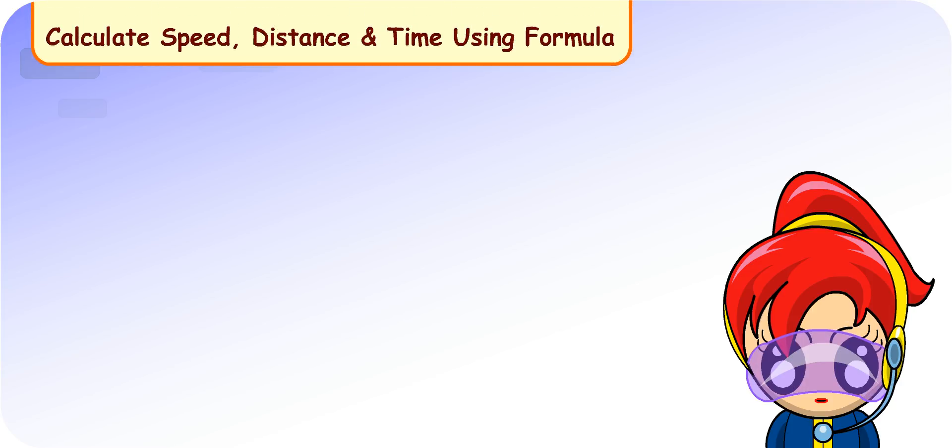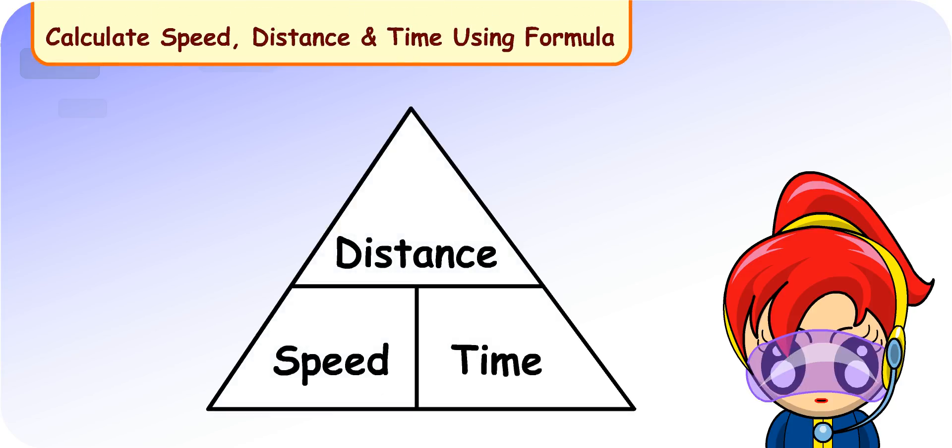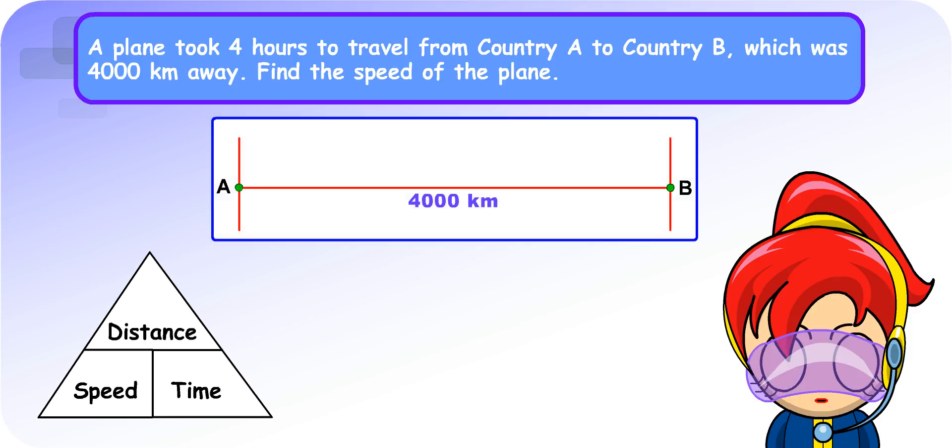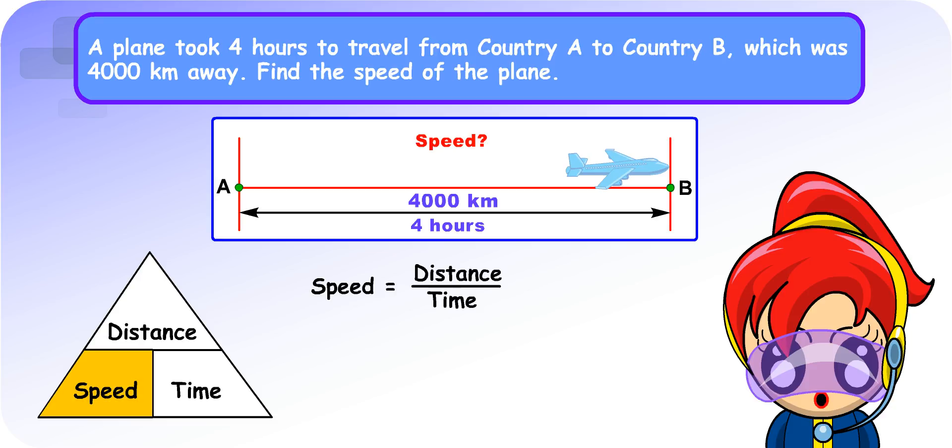We will now learn how to calculate speed, distance, and time using the formula that we have learnt earlier. Take a look at this. Turbo Girl, can you help us solve the problem? Okay, that's quite easy. I know that speed is distance divided by time. So, we have 4,000 km divided by 4 hours, which gives us a speed of 1,000 km per hour. Well done.